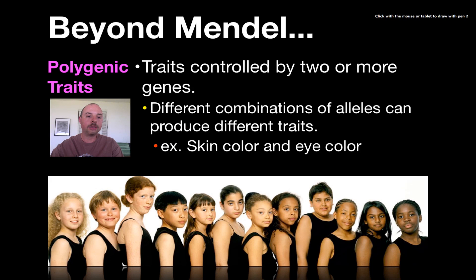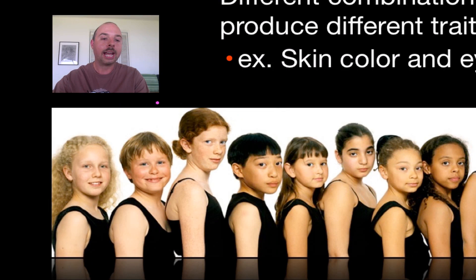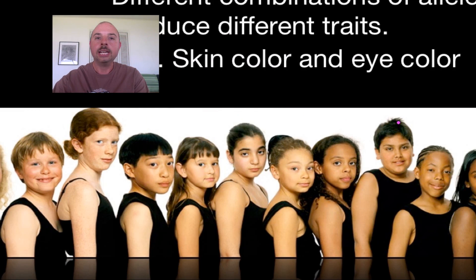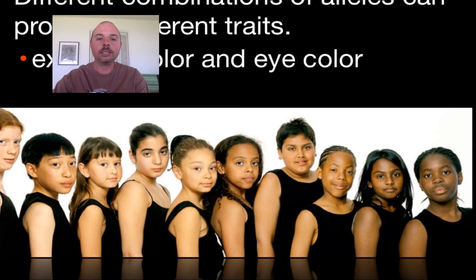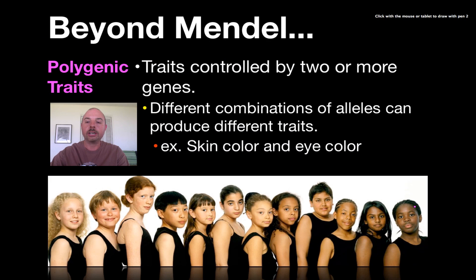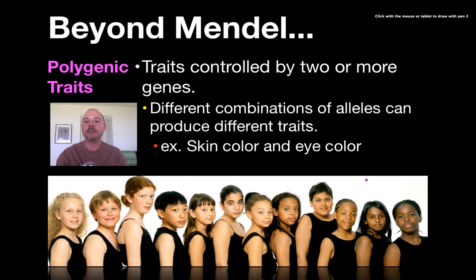Skin color is a great example — you can see individuals with very light, fair skin and light-colored hair, and as you move along, individuals with lots of different skin tones ranging from very fair to very dark, and everything in between. There are a few different genes that control skin color, and it's the combination of these genes — whether homozygous dominant, homozygous recessive, or heterozygous — that gives us all of these different tones.